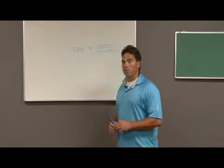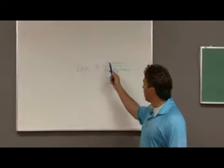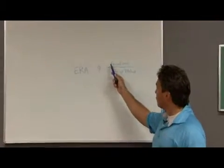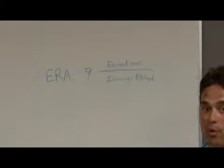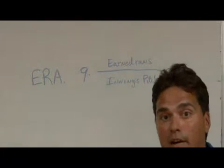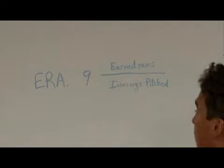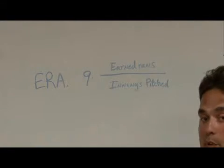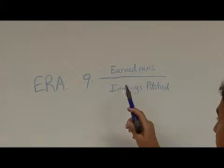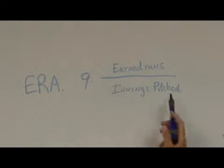The way that you calculate earned run average is pretty simple. It's just your total earned runs, which would not include the runs that are caused by errors made in the field. Only the runs that you have given up through hits, walks, or hit by pitches. Divide that number — your earned runs — divided by your innings pitched.